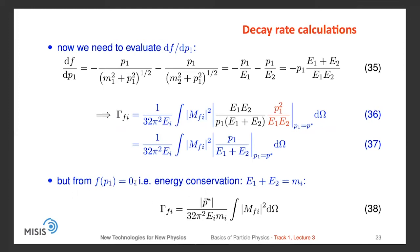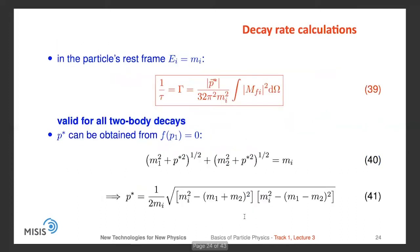At the end, our transition rate is equal to this integral, or simplified further to this expression. Since f(p₁) = 0 and energy conservation gives E₁ + E₂ = M_i, we finally get a simple expression for the transition rate proportional to the matrix element squared integrated over all angles, with an additional factor depending on the energies and mass of the initial particle. In the particle rest frame, E_i = m_i and the expression simplifies even further. This expression is valid for all two-body decays. The value of p* can be obtained easily from the condition f(p*) = 0.